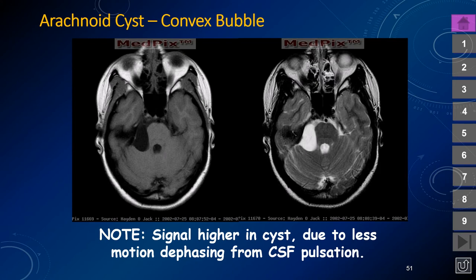Here is an arachnoid cyst in the same location, almost identical to CSF in signal intensity with a rounded convex margin. The arachnoid cyst will not insinuate and wrap around vessels and nerves in the cerebellopontine angle cistern. On the T2-weighted image, there is less motion dephasing of CSF inside the cyst, so it is sometimes slightly brighter than the CSF in the greater subarachnoid space.